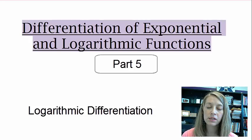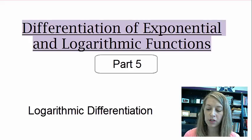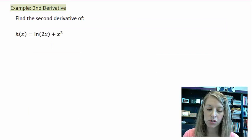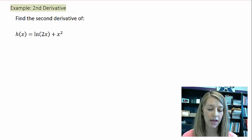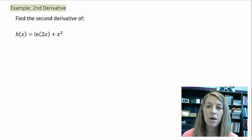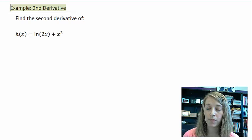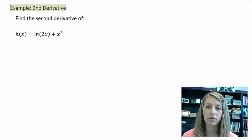Okay, we are just going to be working some more examples of differentiation of exponential and logarithmic functions. And so, I have the first one here. We want to find the second derivative of h(x), where it is defined as the natural log of 2x plus x squared. And so, pause the video and see if you can find this answer on your own.